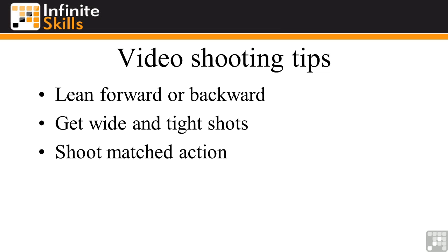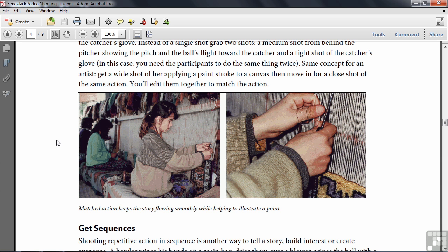Shoot what's called matched action — that's typically a tight and a wide shot where the things happening in the scene are exactly the same. You really need to get some cooperation from your subject when you're doing this, or it needs to be repeated action. Here's an example from the PDF of a wide shot and a tight shot where the action is matching — look at her hands. You can see her hands here basically almost identically match the previous shot. Your viewers won't notice the subtle difference. It's just much more interesting to have a wide shot and then a tight shot.